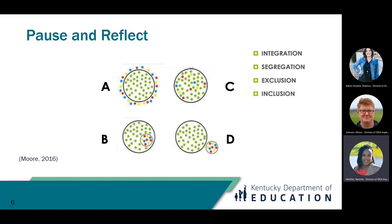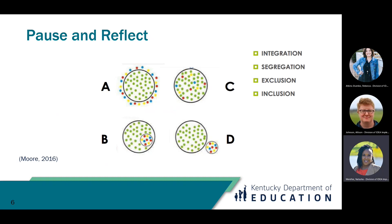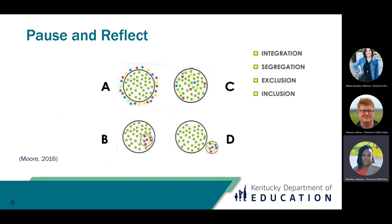For classroom model B, this is a representation of inclusion. While the students — the multicolored dots representing a special education group of students — are in the classroom, they are still grouped only within themselves. So while they are in the classroom, they are still not engaging with their grade-level peers. Model C resembles integration, where we have general education and special education students in the classroom integrated together.